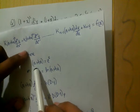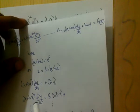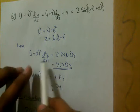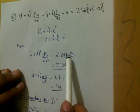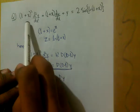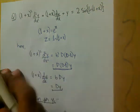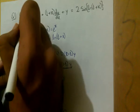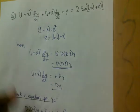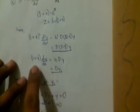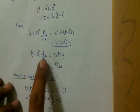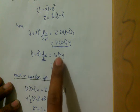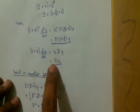By the derivation, (1 + x)²(d²y/dx²) = b²·D(D−1)y. Here b = 1, so b² = 1 as well. And (1 + x)(dy/dx) = b·Dy; since b = 1, this equals Dy. We now substitute these terms back into the equation to calculate yc.